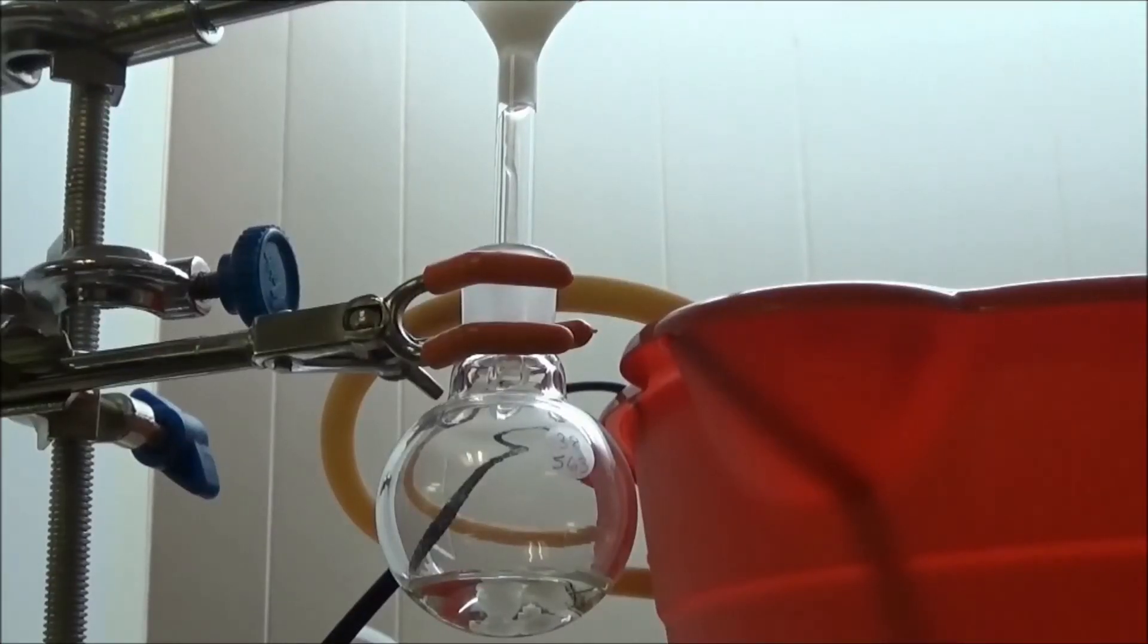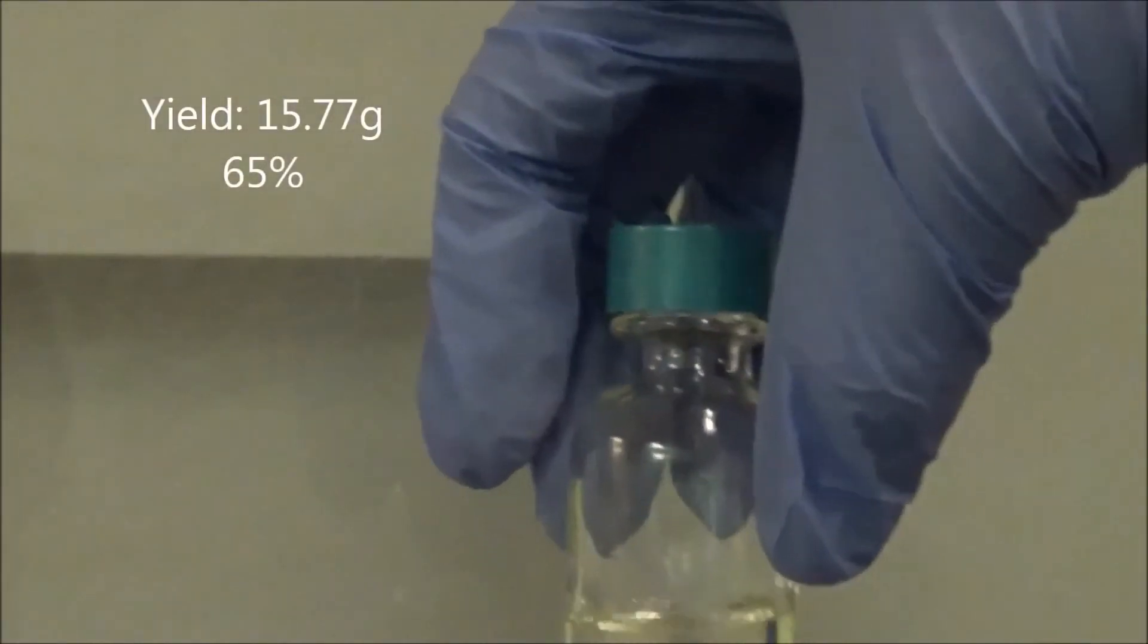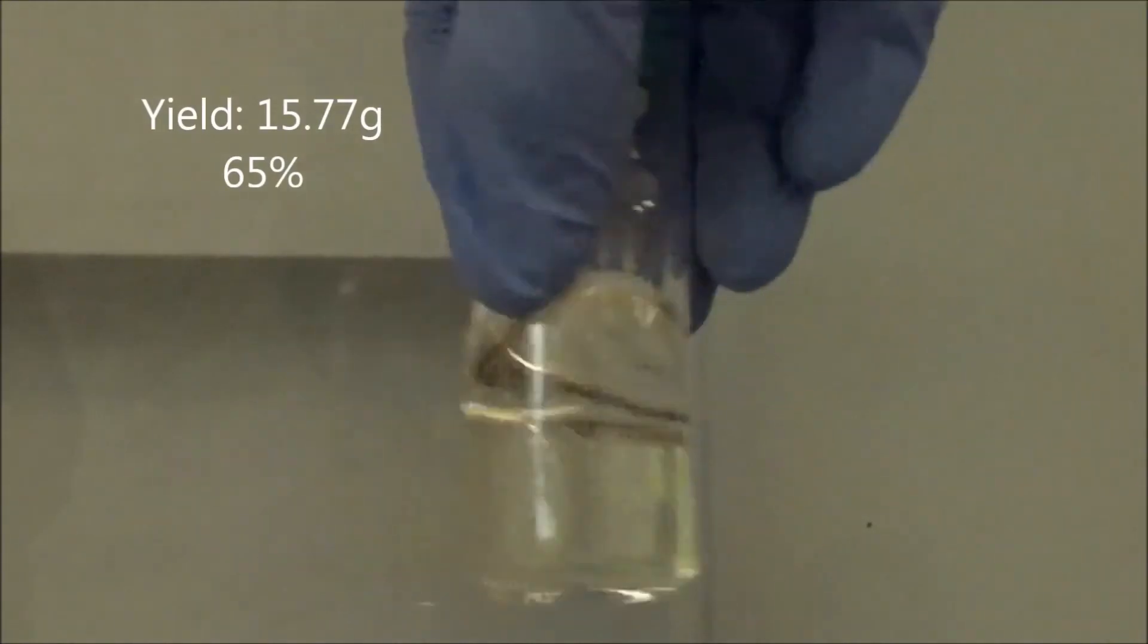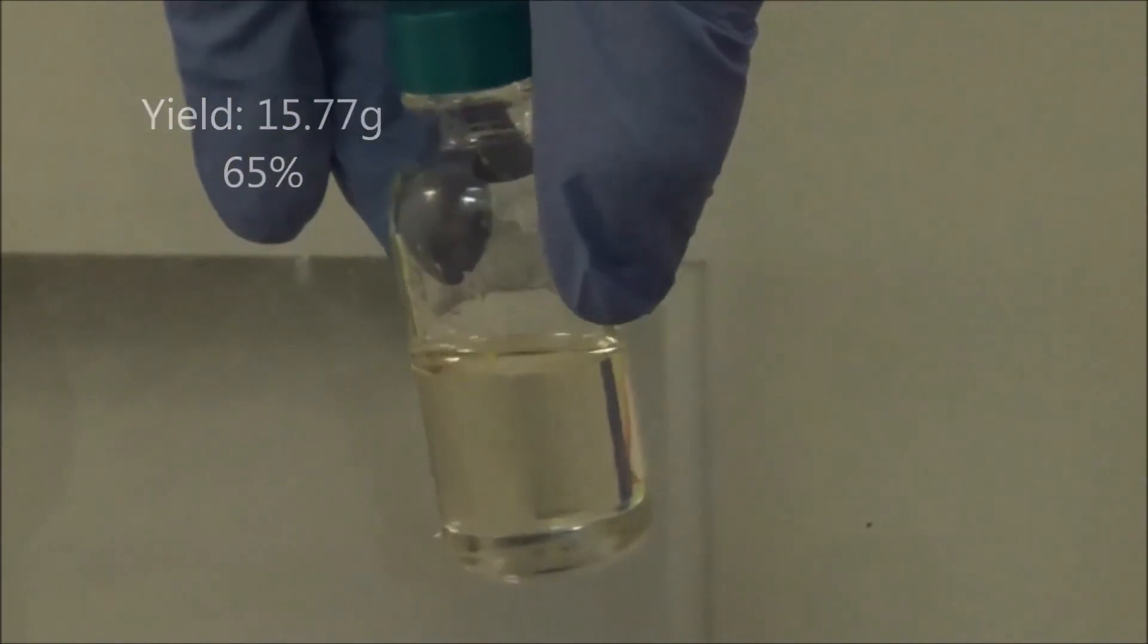Finally, I filtered off the drying agent. The yield was 15.77 grams, a 65% yield based off of phthalic anhydride.